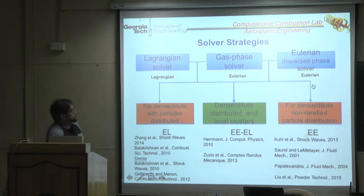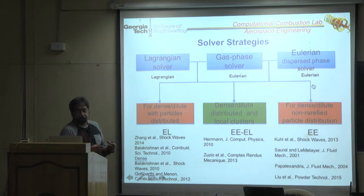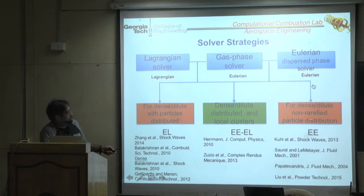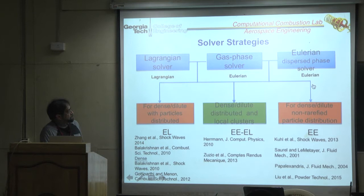When particle loading is so high that you need trillions of particles to be tracked, there's no way to track them. Instead you track the volume fraction in an Eulerian method — typically used for dense-to-dilute regions. Eulerian-Lagrangian is the classical approach used in spray combustion where particles are dilute.